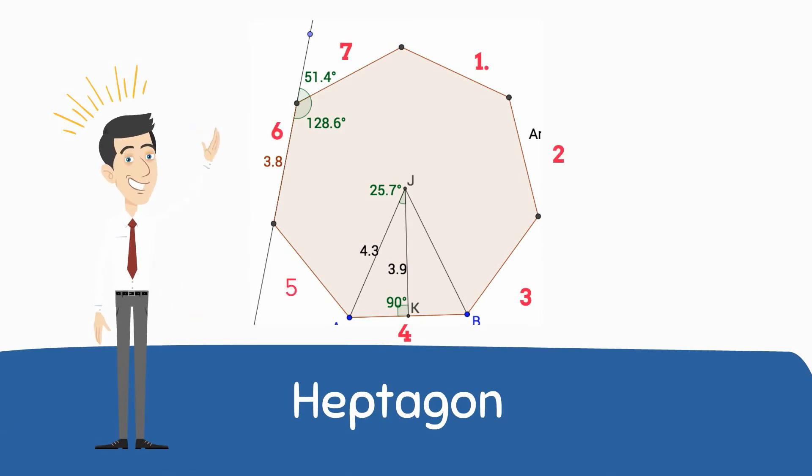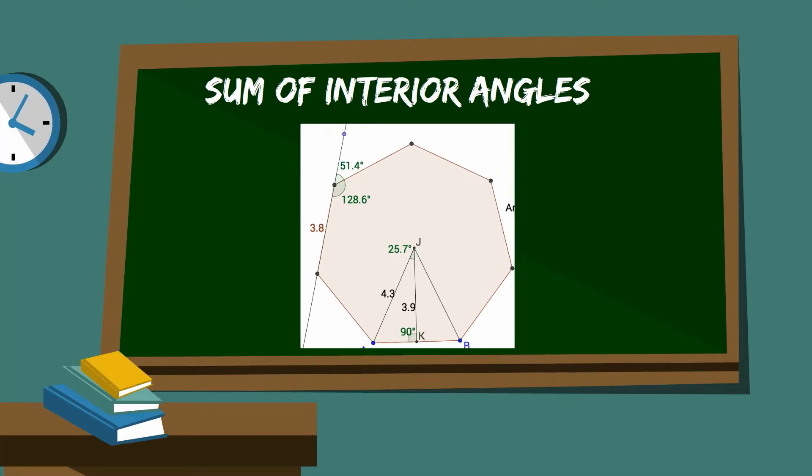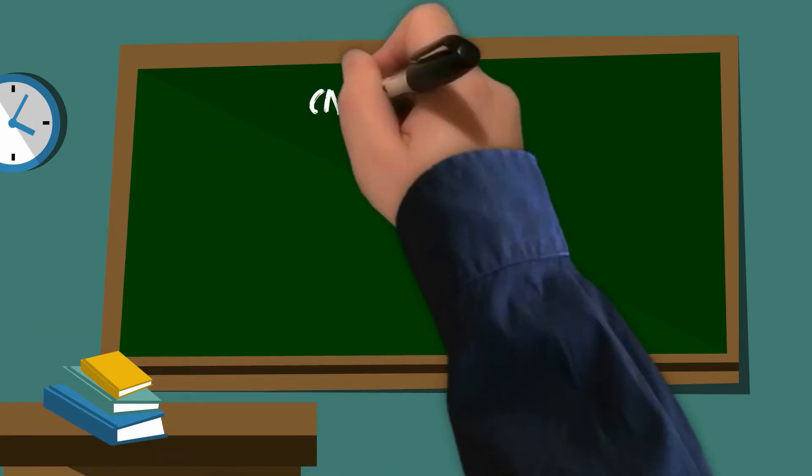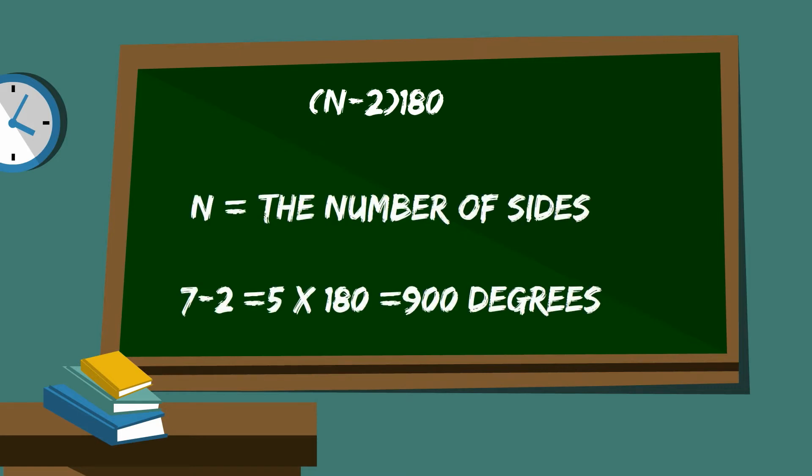You can find the sum of all the interior angles of a polygon by taking n-2 times 180, and n equals the number of sides.